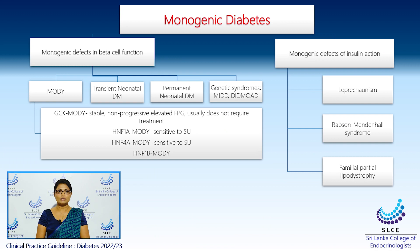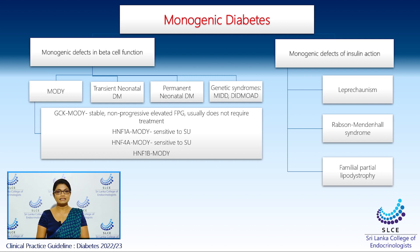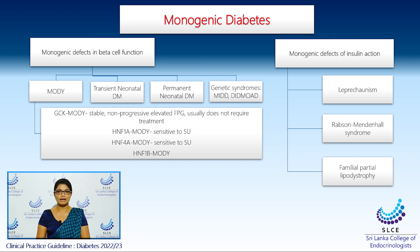Moving on to the specific types of diabetes — monogenic diabetes, although rare, carries an important type. In monogenic diabetes, there are two main types: monogenic defects in beta cell function and monogenic defects in insulin action. In monogenic defects in beta cell function, you will see a single gene mutation carrying a risk for diabetes. The common variety is maturity onset diabetes of the young, known as MODY. There are rarer types such as transient neonatal diabetes mellitus, permanent neonatal diabetes mellitus, and even rarer genetic syndromes such as MIDD syndrome, as well as DIDMOAD syndrome, also known as Wolfram syndrome.